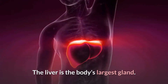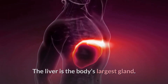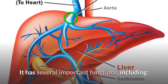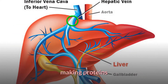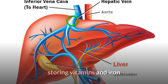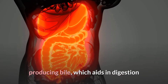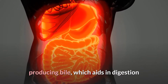The liver is the body's largest gland. It has several important functions, including making proteins, storing vitamins and iron, removing toxins from your blood, and producing bile, which aids in digestion.